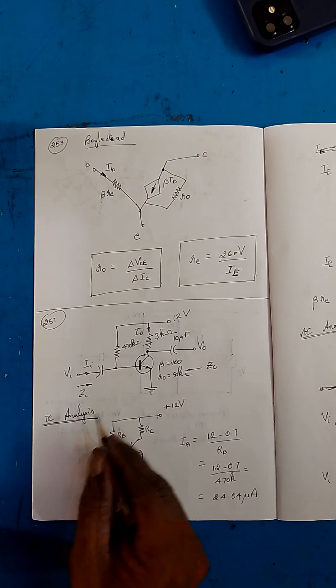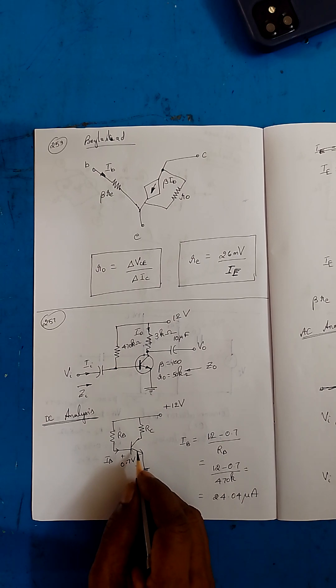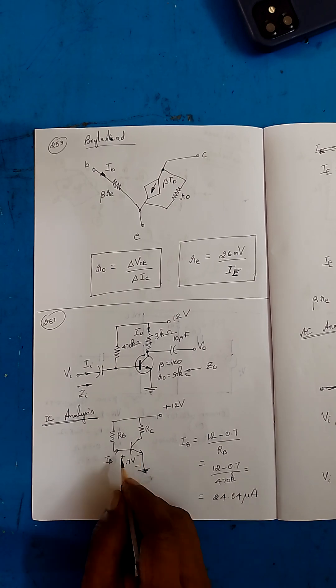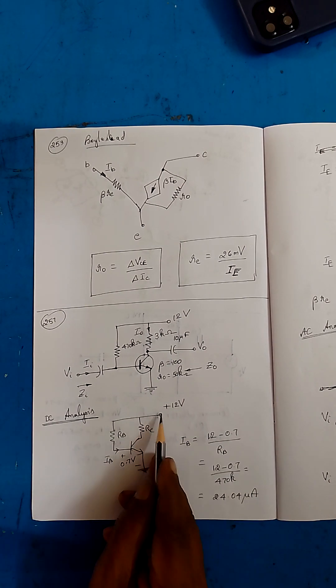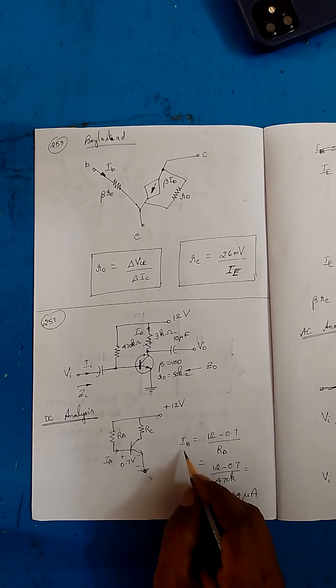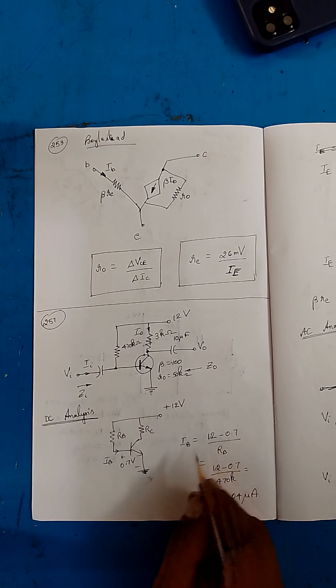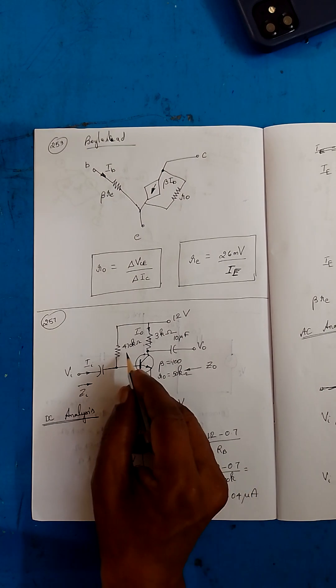I assume this is a silicon transistor. Therefore, with respect to ground, this point is 0.7 volts. Here it is given as 12 volts. So what is the voltage drop here? 12 minus 0.7 will be the voltage drop across RB. Therefore, IB is 12 minus 0.7 divided by RB. The RB value is given in the question itself, it is 470k. On simplification, you will be getting 24.04 microamps.